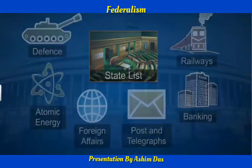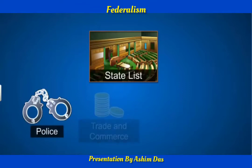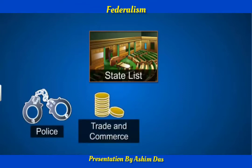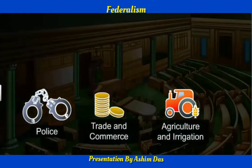The second list is the state list, which consists of 66 subjects of state and local importance, such as police, trade, commerce, agriculture, and irrigation. The state legislature alone can make laws related to subjects mentioned in the state list.